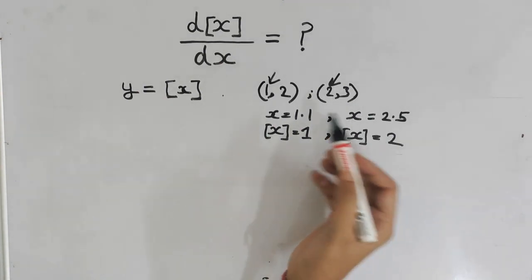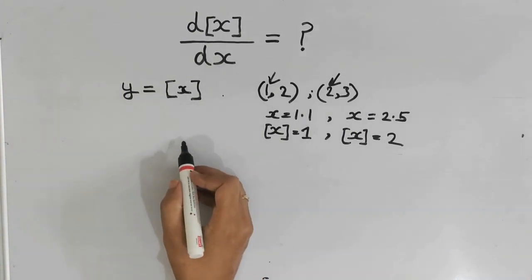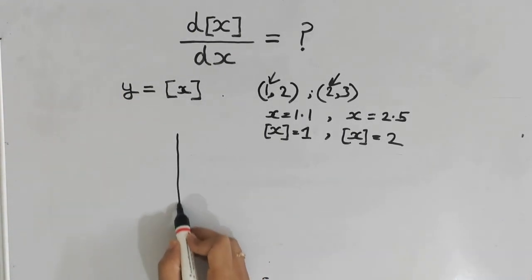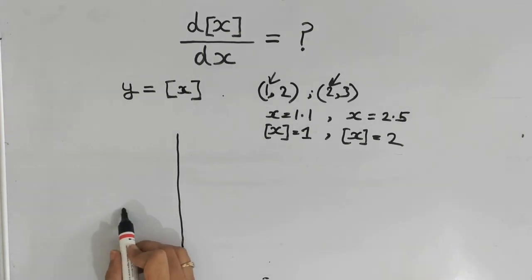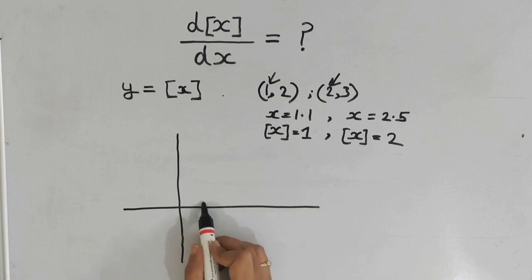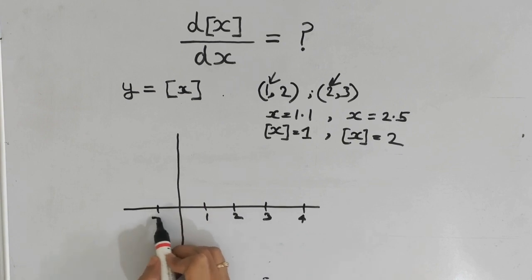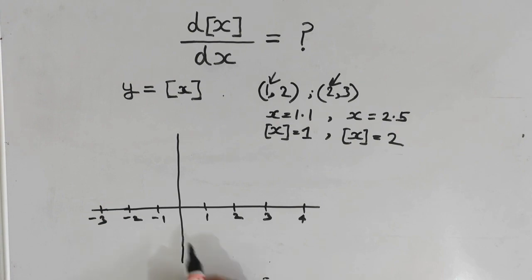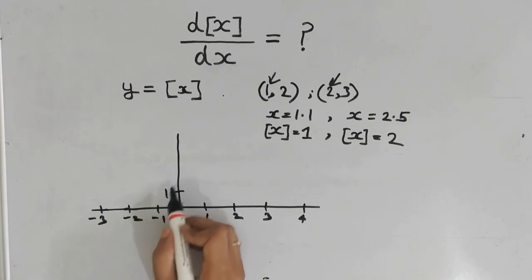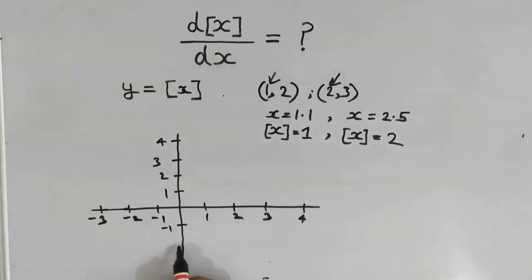Now let's make a graph of this greatest integer function. So if I make the graph of this function, I'll mark the axes: 1, 2, 3, 4, minus 1, minus 2, minus 3 on the x-axis, and similarly 1, 2, 3, 4, minus 1, minus 3 on the y-axis.